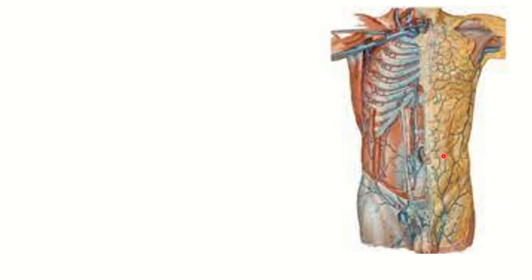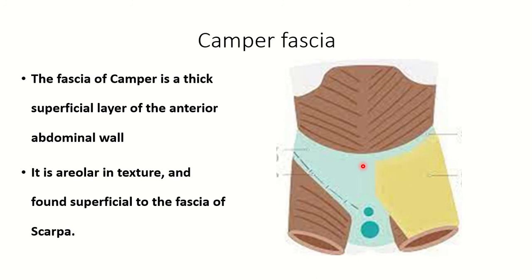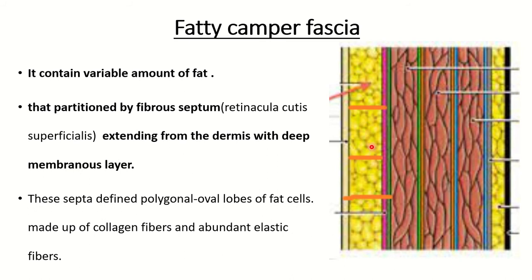The distribution of the blood vessels within the superficial fascia of the abdomen. The Camper fascia is the thick superficial layer of the anterior abdominal wall, irregular in structure, and found superficial to Scarpa fascia — this is Scarpa fascia, this is Camper fascia, and it is thicker than Scarpa fascia. The Camper fascia contains a variable amount of fat, and there are fibrous septa present which connect the dermis to the deeper fascia of the abdomen covering the muscles of the anterior abdominal wall. These fibrous septa are also known as the retinacula cutis superficialis, as they divide the superficial fascia into fat lobes.